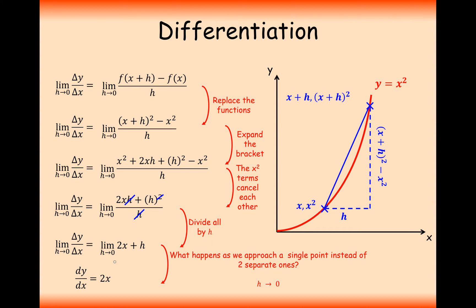So what we can say here now is that dy by dx — which is our notation for the gradient — equals 2 times x. So if we take the x value of 6, the gradient at that point is going to be 12 through this method. This little formula at the top — f of x plus h minus f of x, all divided by h — is what is important for you to write down and remember.